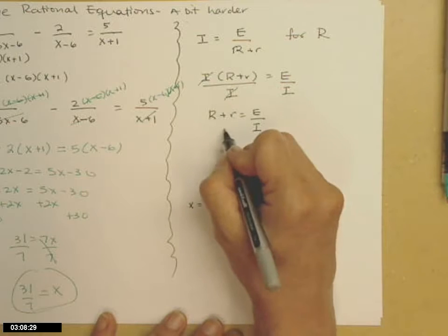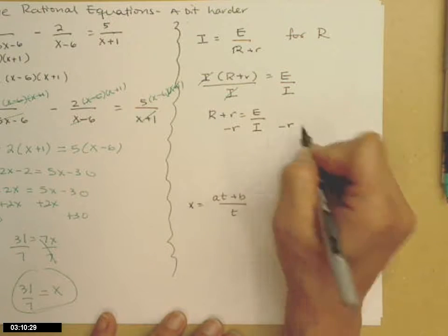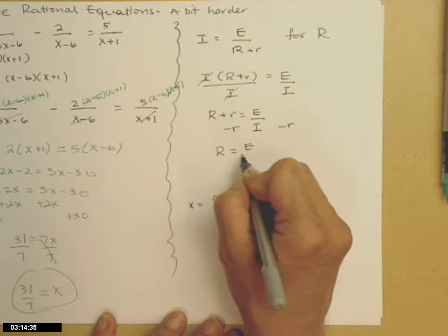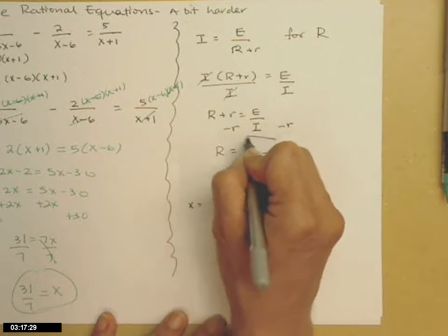And now to get the capital R by itself, I just subtract little r from both sides, to get me capital R equals e over i minus r.